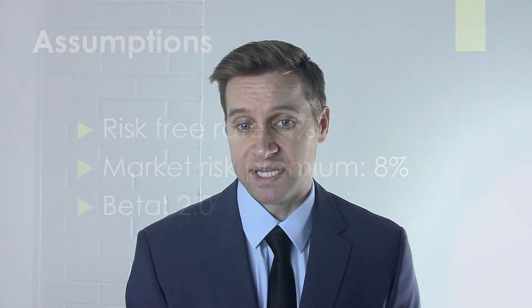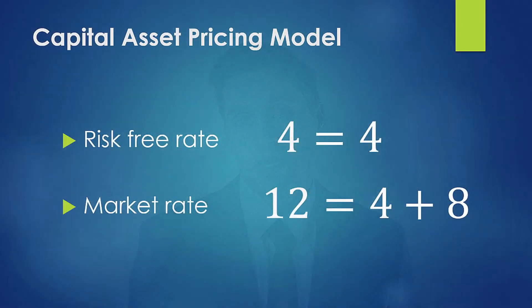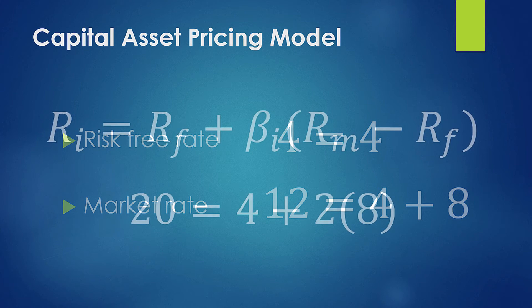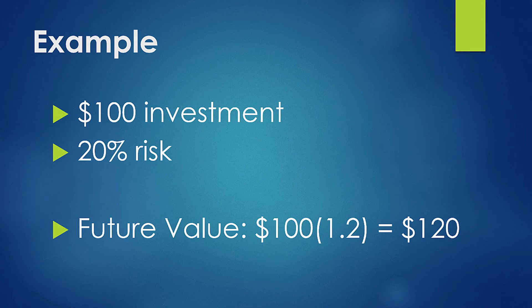Let's do an example with hypothetical numbers. For the risk-free rate we'll use 4%, for the market risk premium we'll use 8%, and for beta we'll use 2. Starting with the risk-free rate of 4%, our benchmark return is 4%. Adding the market risk premium: 8 plus 4 equals 12%, so a market index investment should expect a 12% return. Multiplying by a beta of 2: 8 times 2 is 16, plus 4 equals 20%. That's a pretty high return — but it's a risky investment and we should expect a high return to be compensated for holding that risk. So investing $100 at 20%, we should expect a return of $120.